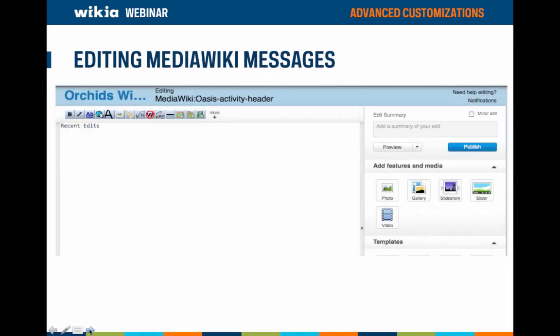How do you adjust one of these messages? First, you need to be an admin on your wiki. If you are, all you need to do is find the corresponding message page and click edit. This will be a page in the MediaWiki namespace with the URL corresponding to the name of the message. To adjust the 'recent wiki activity' message, go to the URL ending in MediaWiki:oasis-activity-header. From there, add your custom text just like on any normal edit page before saving. A quick way to get there is from the Special:AllMessages page. Before adjusting a message, I recommend chatting with your other admins to agree on the wording.